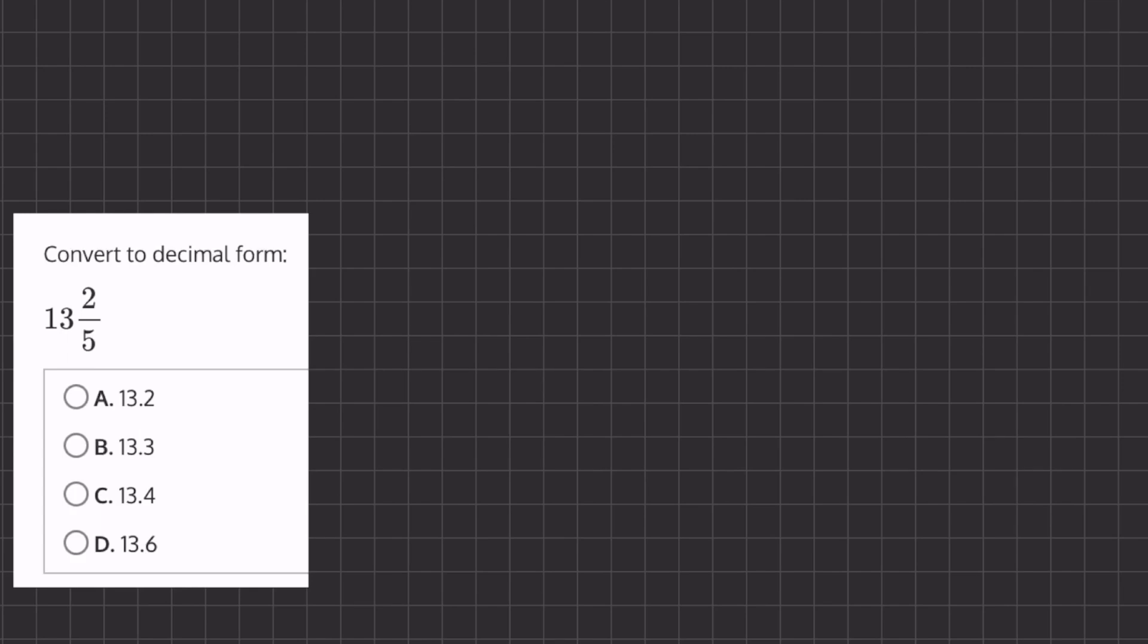In this problem, we are asked to turn 13 and 2/5 into decimal form. 13 is going to be our whole number, and we're going to have some kind of decimal after it. We're going to leave the 13 alone and only pay attention to this 2/5.